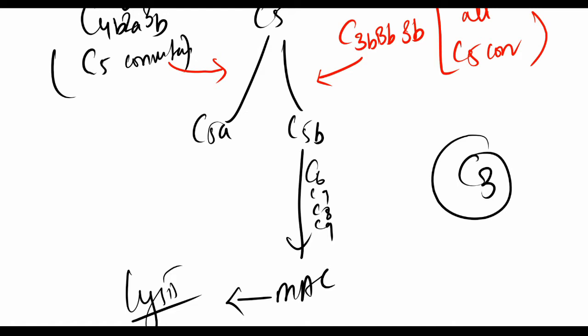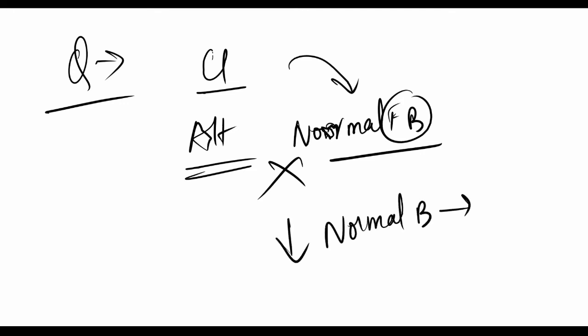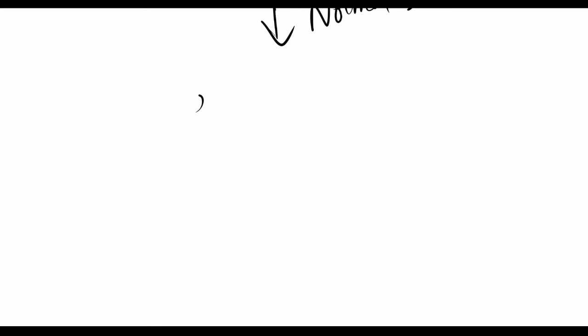One more important point would be: if the question was how do you differentiate if the classical pathway has been activated or the alternate pathway? It's pretty simple - you see the initial things. If we have normal Factor B level in the blood, it means that alternate pathway was not activated, so classical pathway was activated. If you have decreased Factor B level, that means alternate pathway was activated.